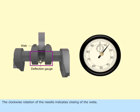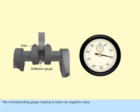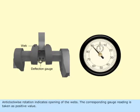The clockwise rotation of the needle indicates closing of the webs. The corresponding gauge reading is taken as negative value. Anti-clockwise rotation indicates opening of the webs. The corresponding gauge reading is taken as positive value.